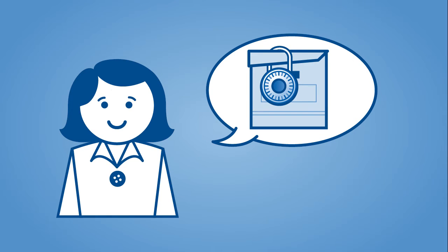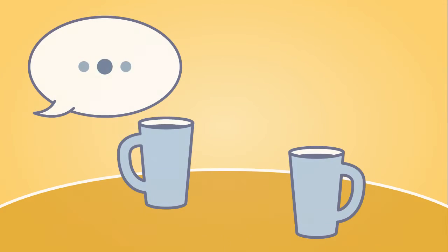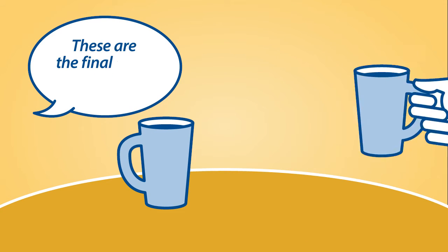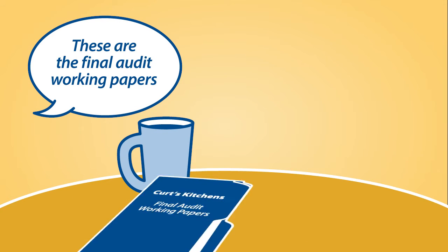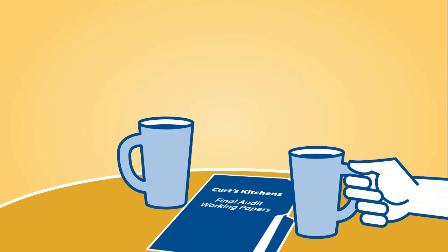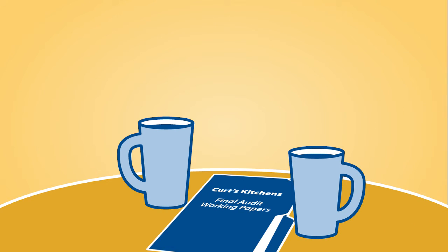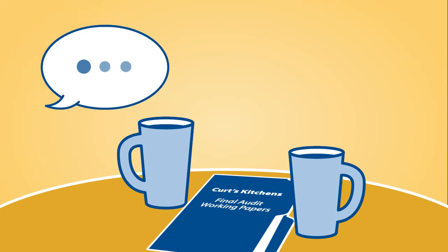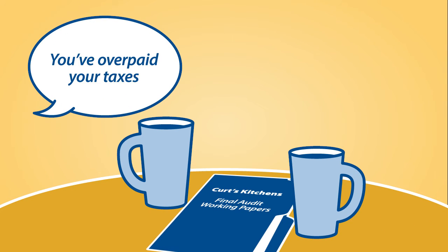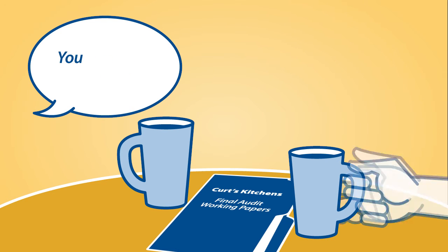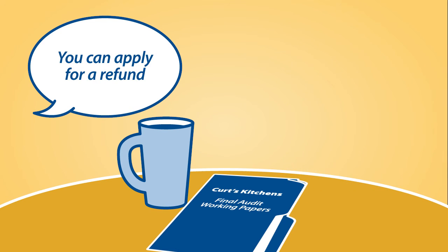Curt's records will be safeguarded and kept confidential at all times. At the end, Curt can expect to meet with the auditor to receive a copy of the final audit working papers and to discuss the results. The auditor will let Curt know if he owes or if he's overpaid taxes. If he's overpaid taxes, the auditor will explain how to complete a refund claim.